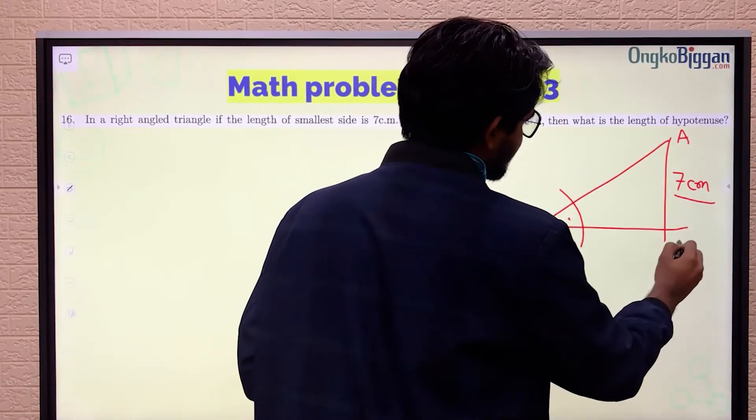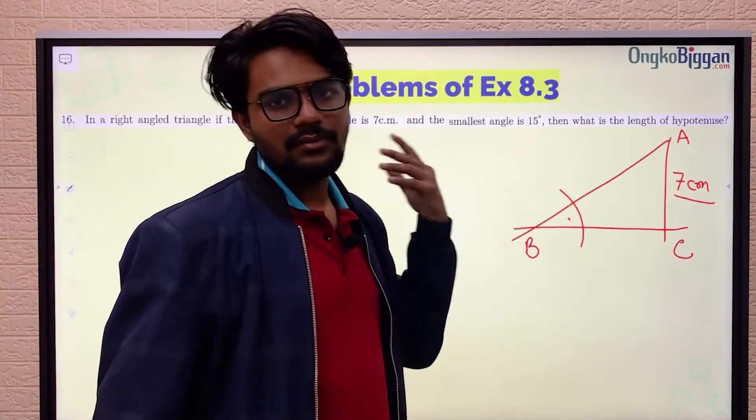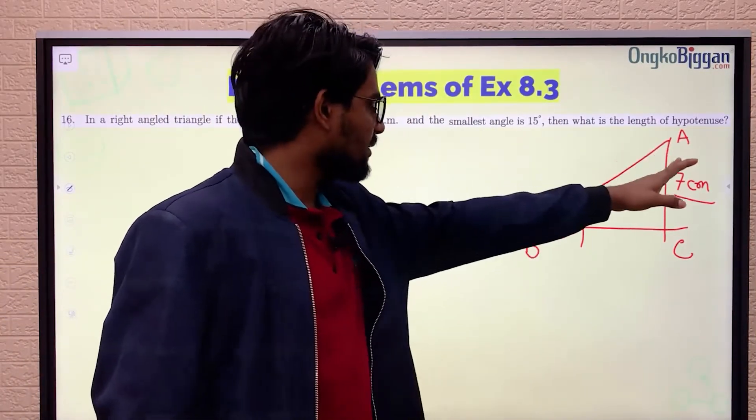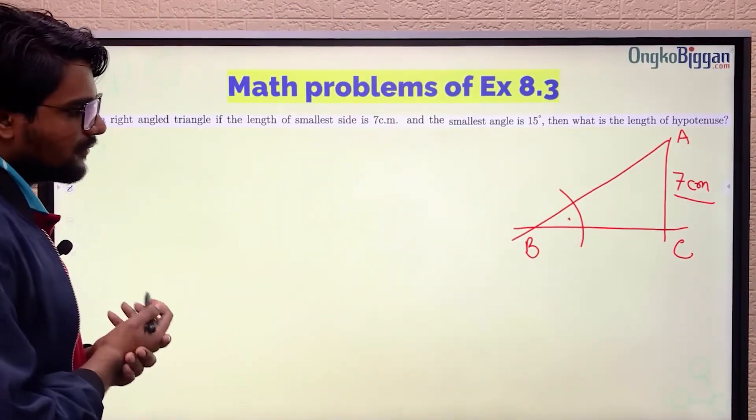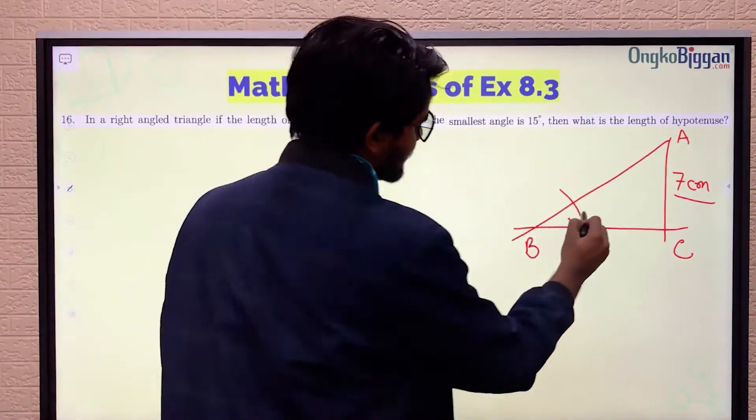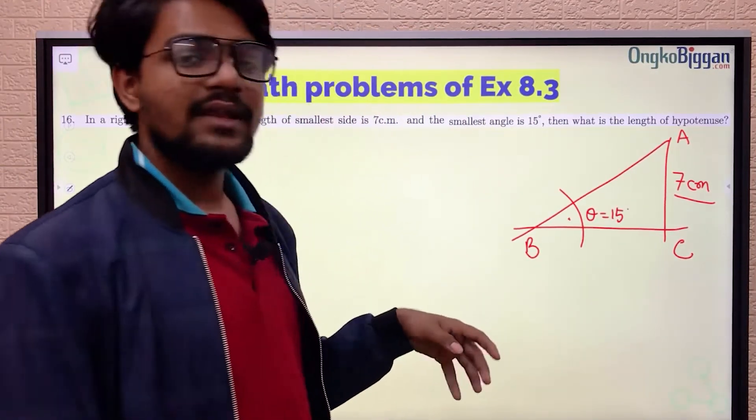Before that, I name the angles A, B, and C. ABC is actually our triangle, and we need to find the length of the side AB. If you look closely, it is the angle theta and 15 degrees.